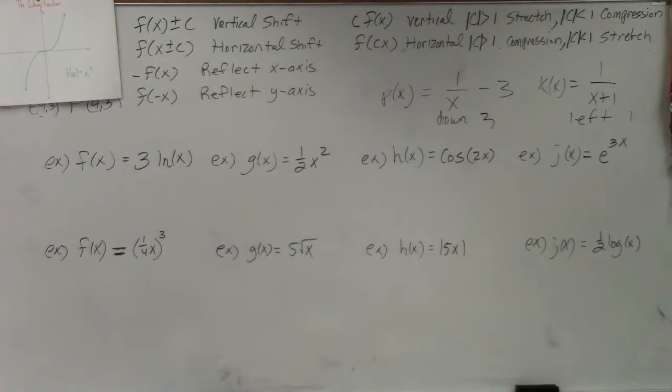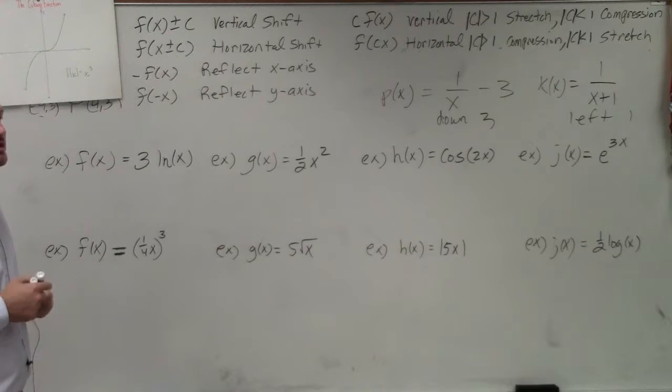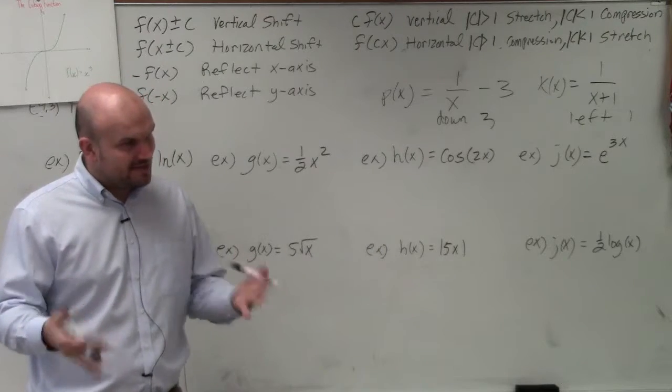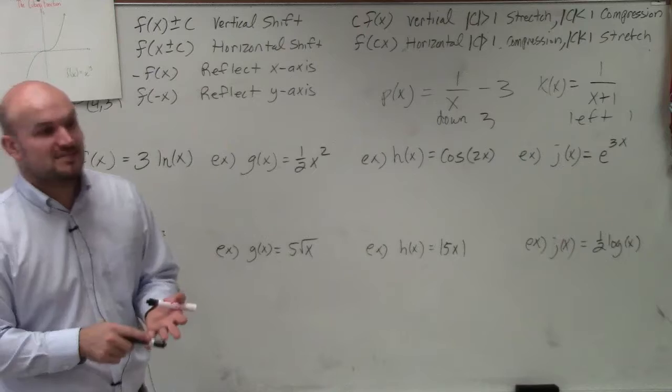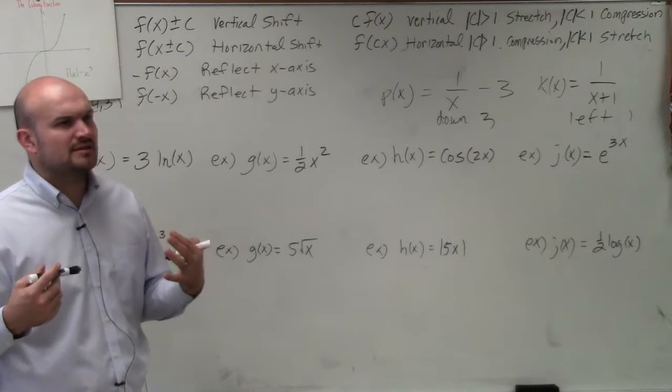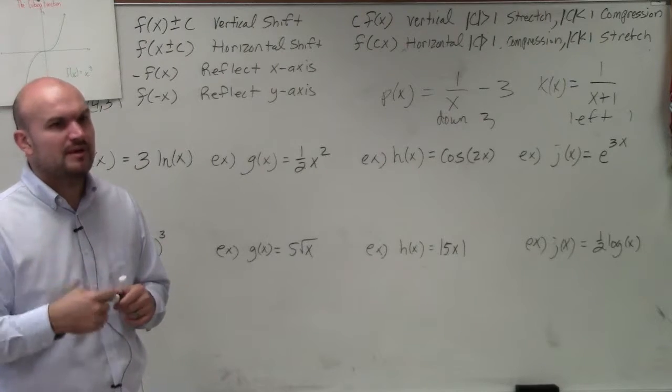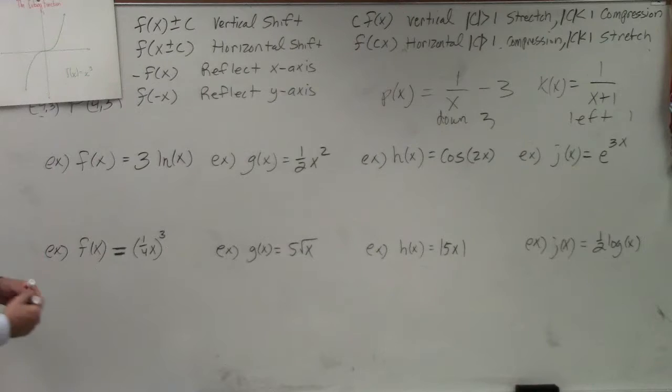I do have some other things I want to go over with you guys. In this example, we need to make sure we're determining if we're multiplying on the inside or the outside. Inside is basically inside parentheses, under a radical, raised in the exponent, under the denominator. If you're just multiplying that value by the function, then it's outside. Here's an example of multiplying my function outside.